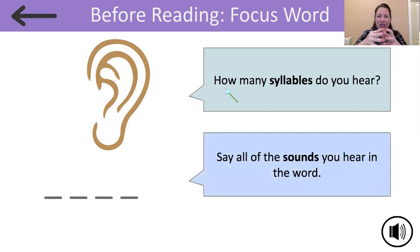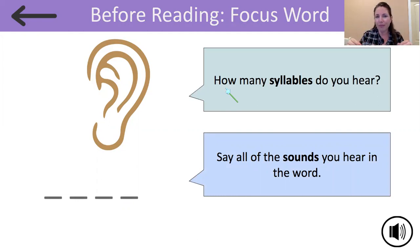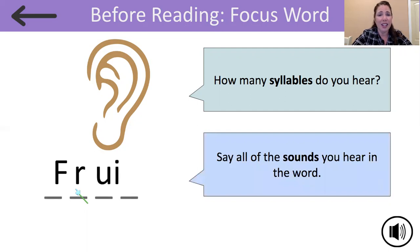Now let's try and stretch out that word fruit. What sounds do you hear in the word fruit when you stretch it out? We hear F, R, oo, and the last sound we hear is T. And what letter makes the T sound? Yes, T makes the T sound. F, R, oo, T.